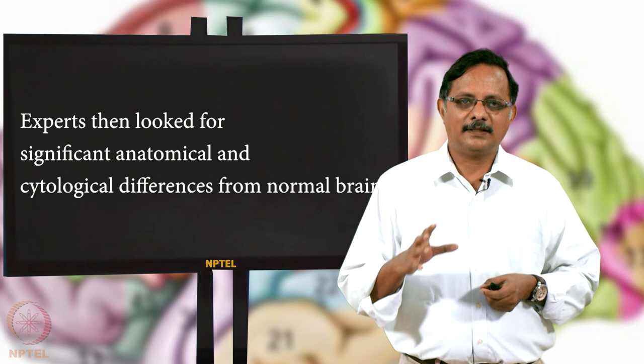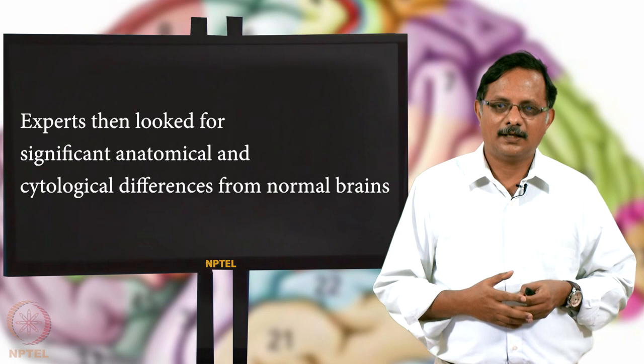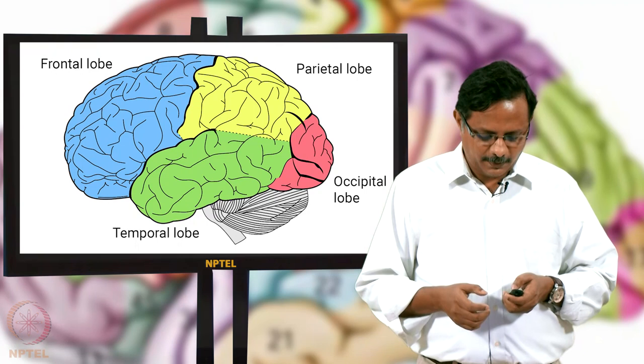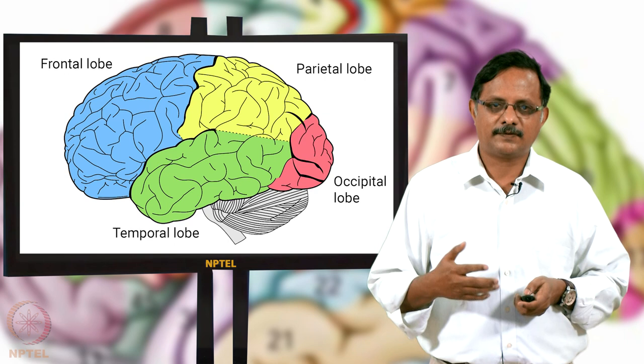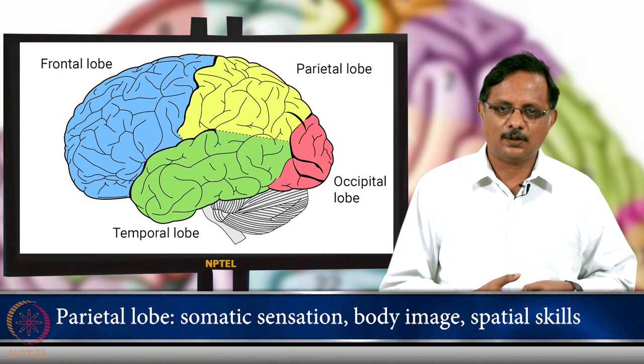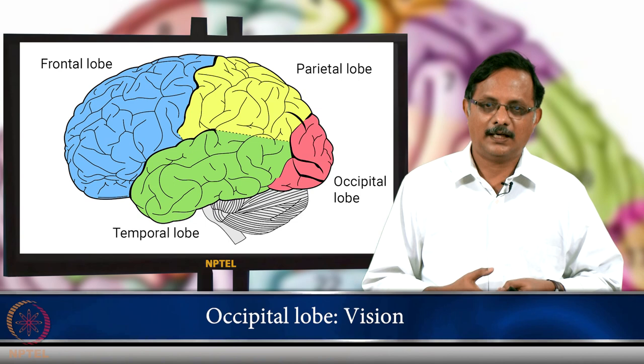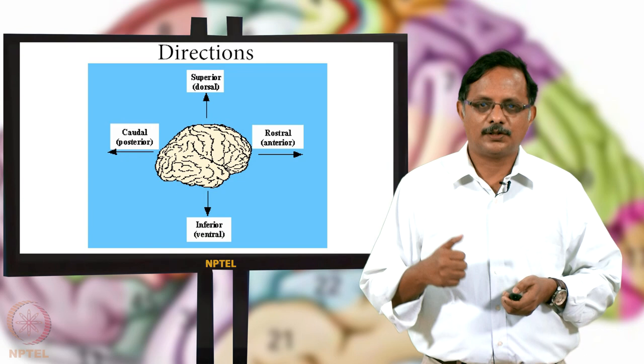To explain the findings of these studies, we first need to introduce some anatomical terms. The brain has two hemispheres, and each hemisphere has several lobes: the frontal lobe (blue region), the parietal lobe (yellow region), the temporal lobe (green region), and the occipital lobe (pink region).